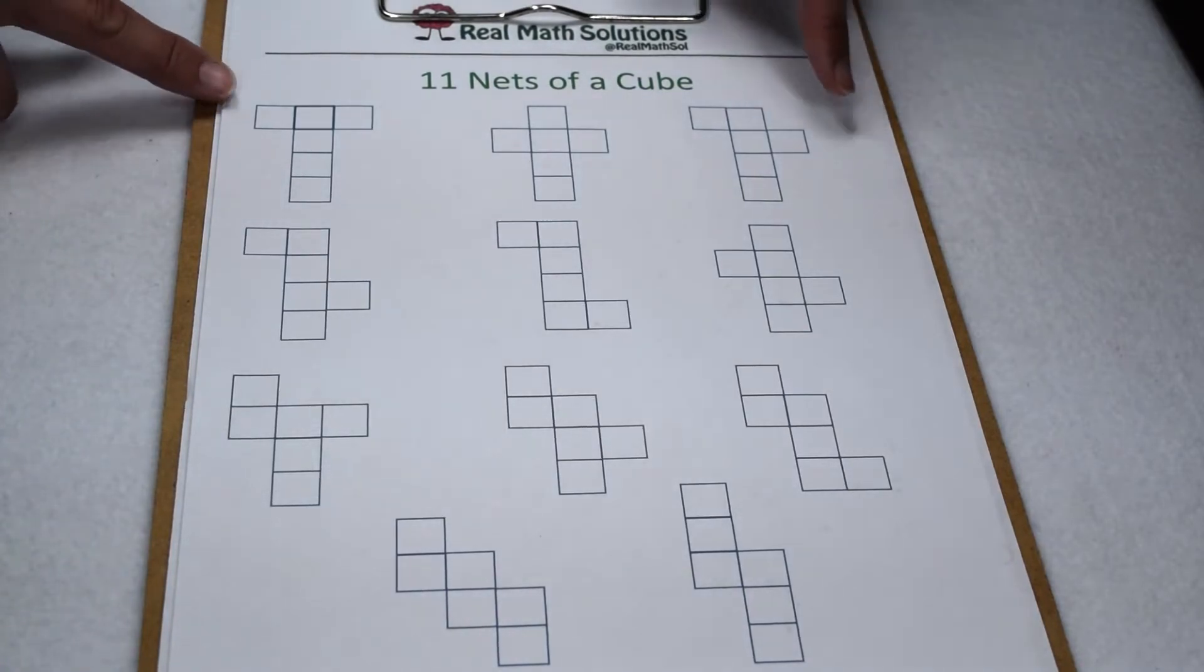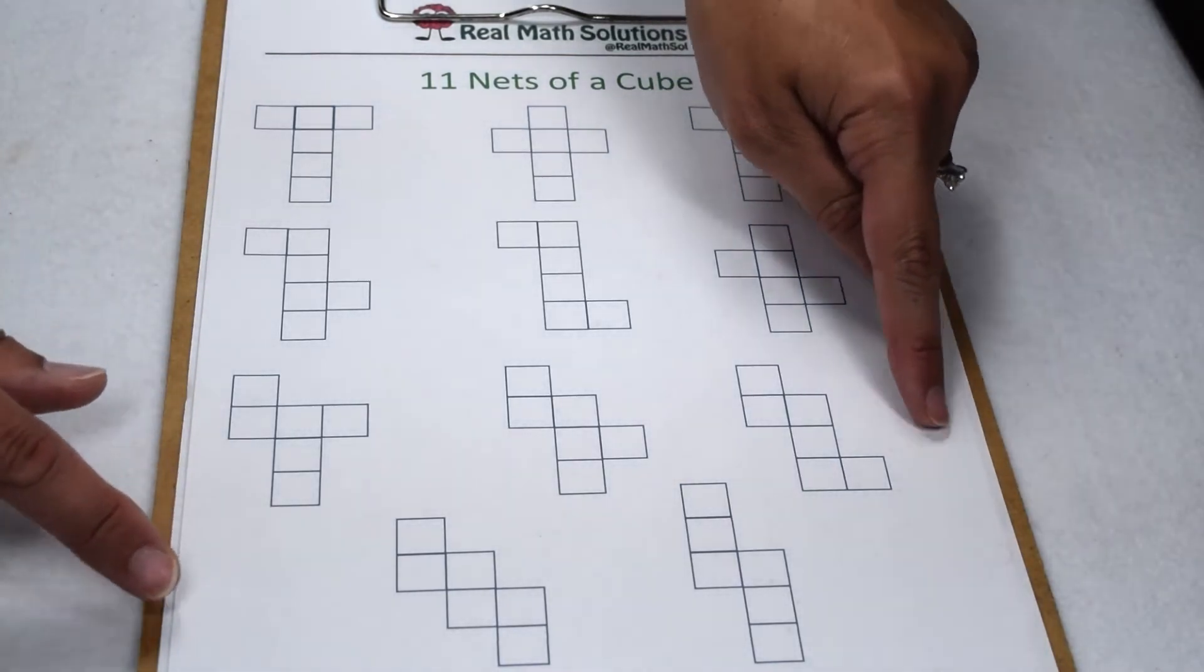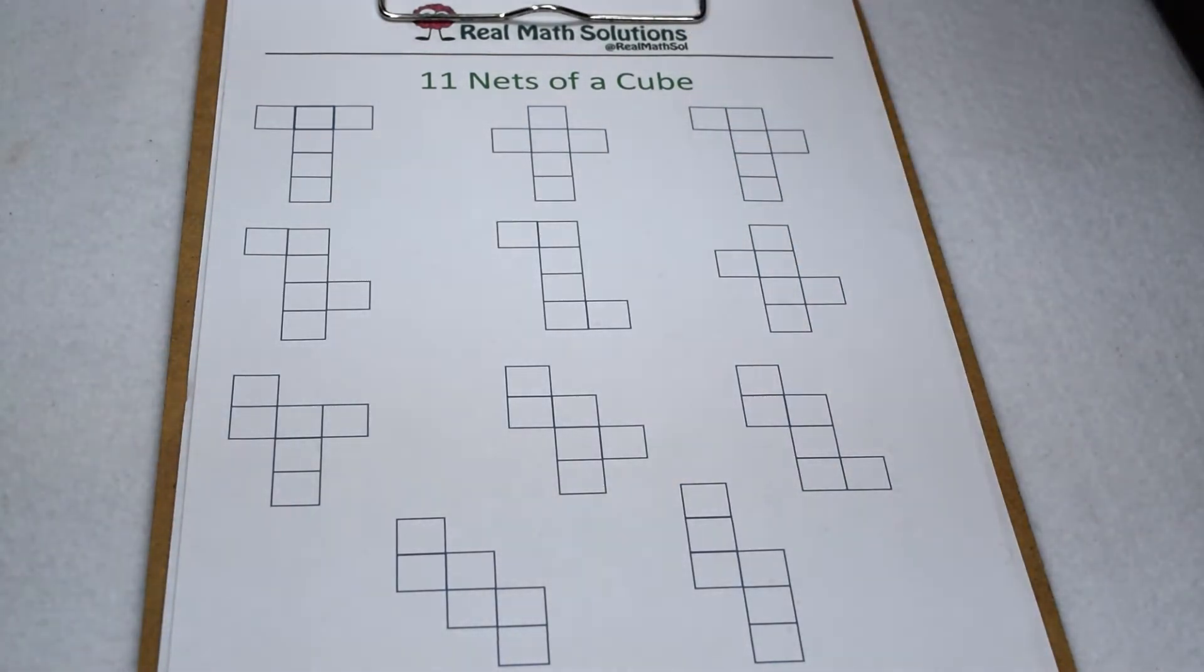When we take our cube and want to make it into a net, there are 11 different ways so we can flatten our cube into a net. Here they are and we're going to test them all out.